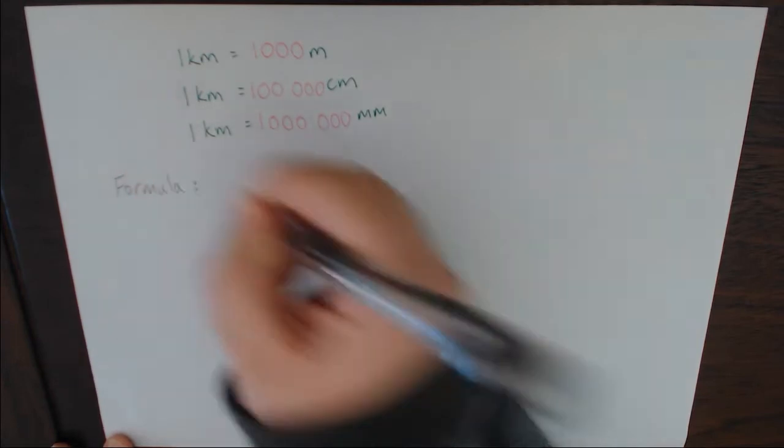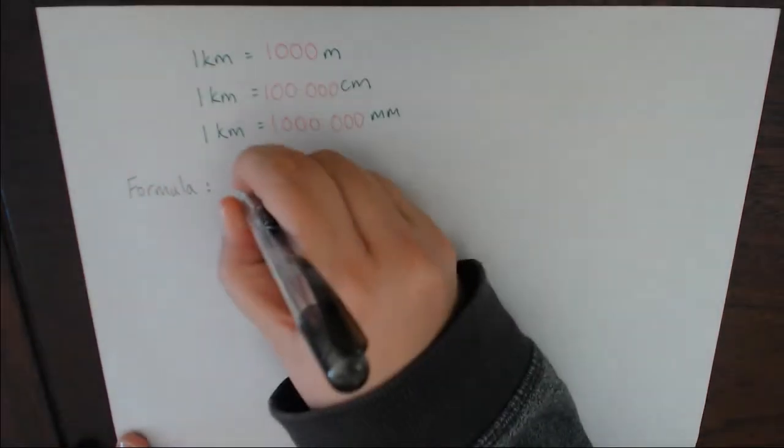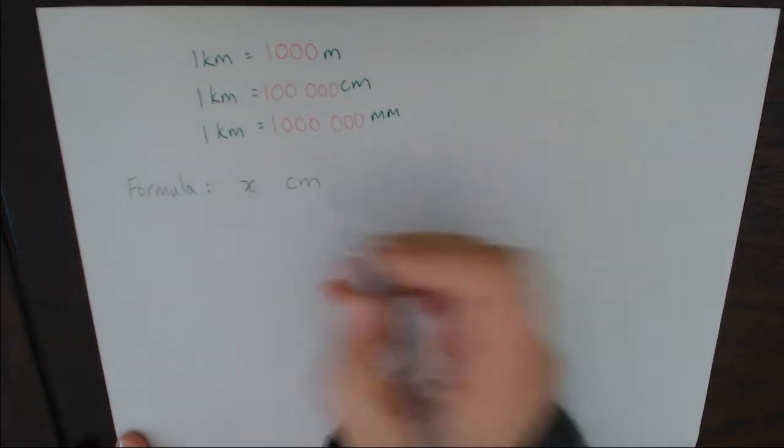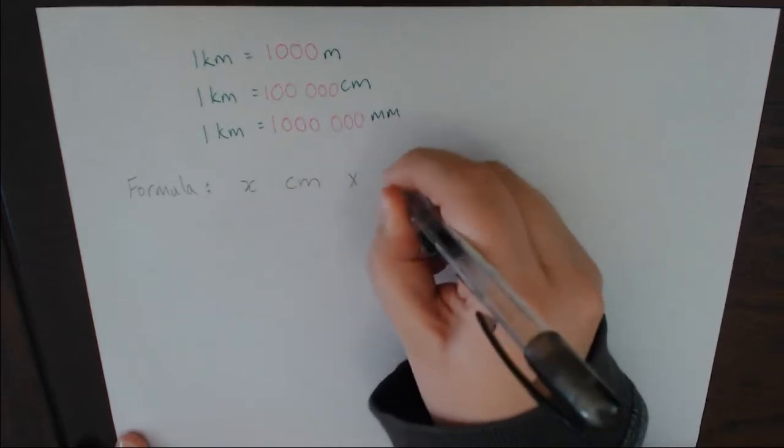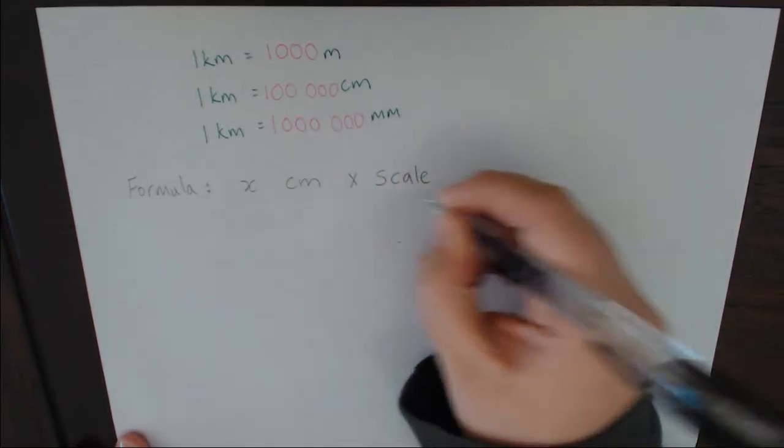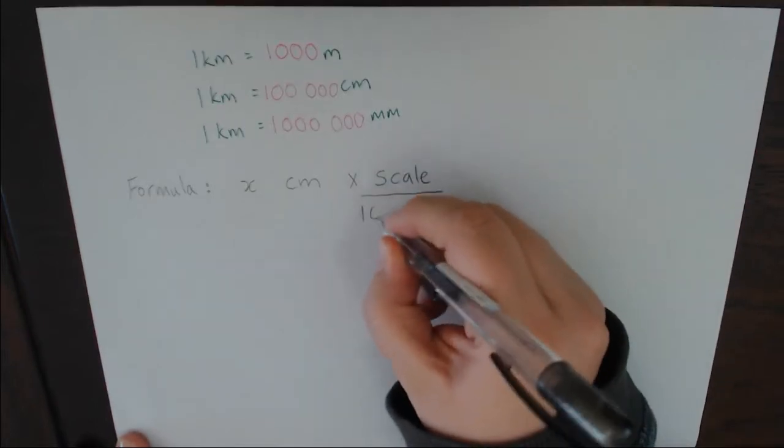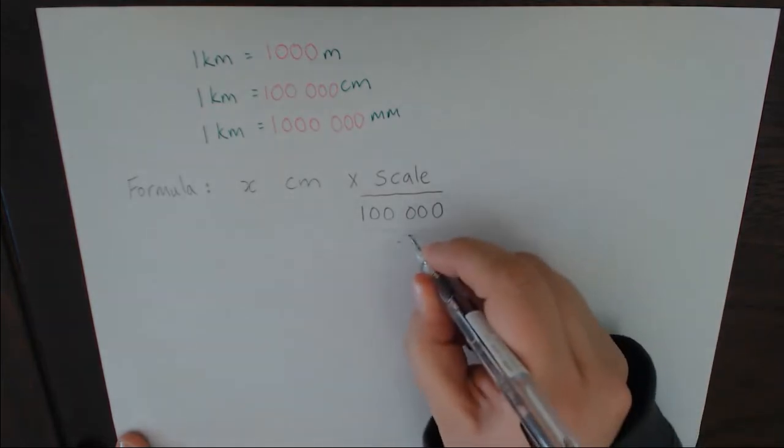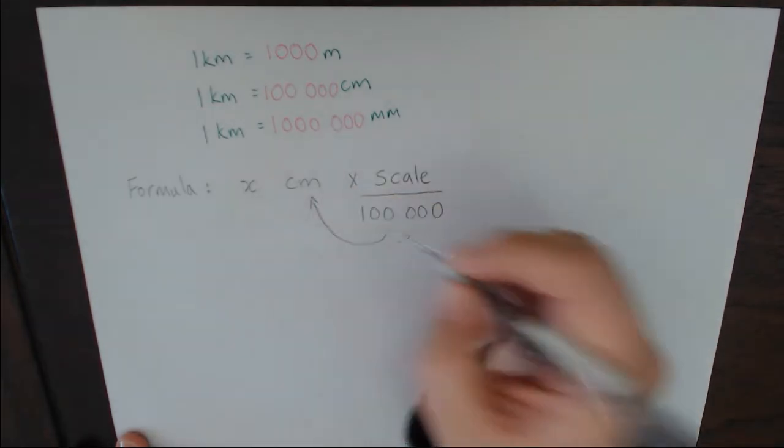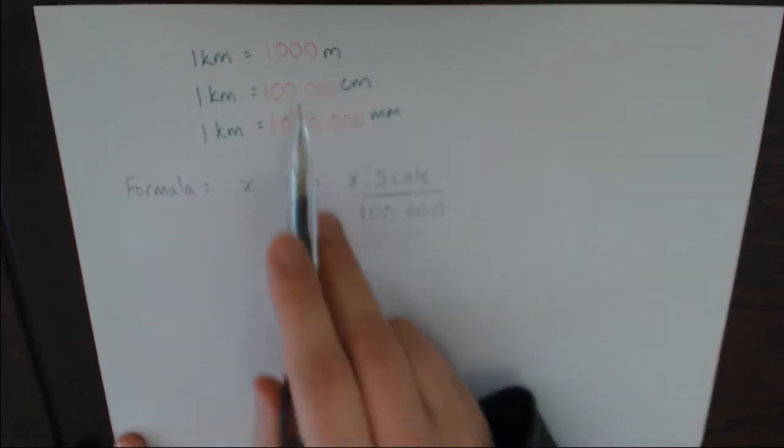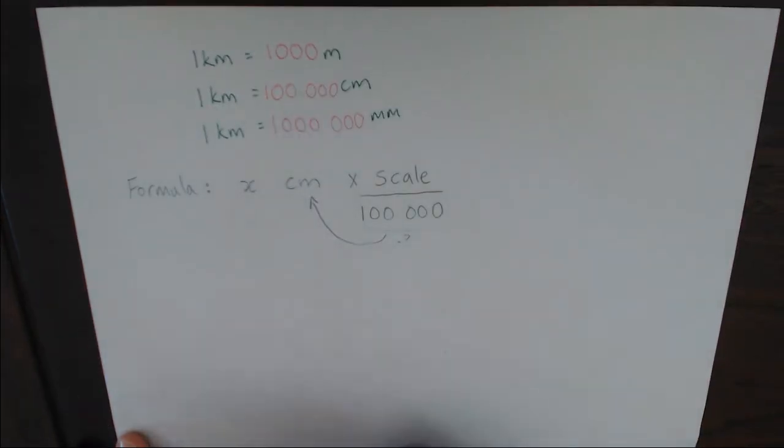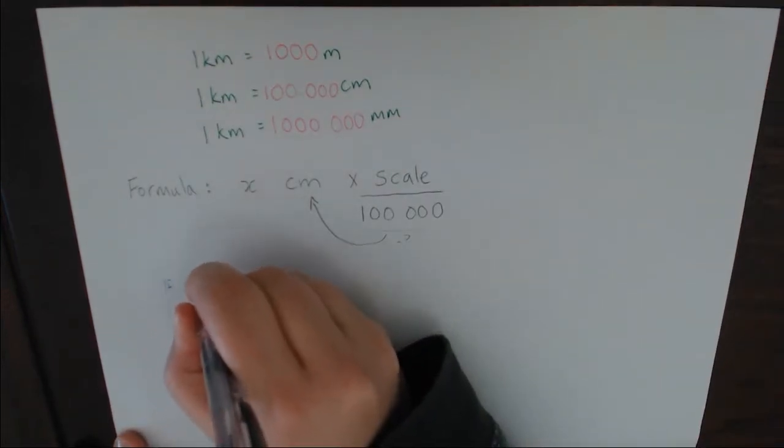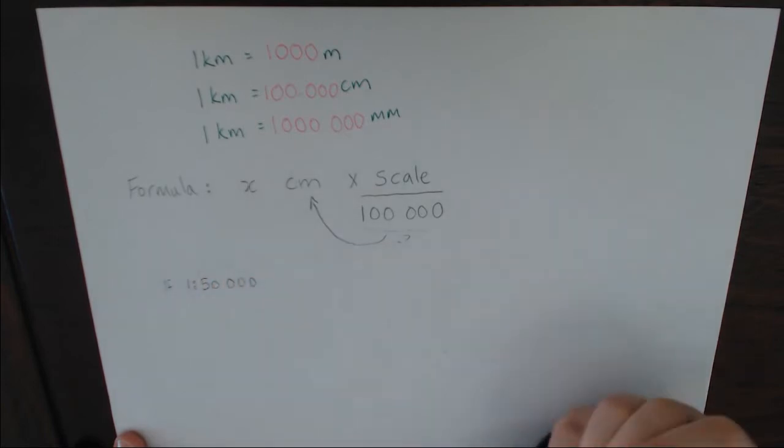Okay, so we are going to look at the formula that we use to measure distance on a map. So we have X as the number of centimeters that we have measured with our ruler. Multiply that by the scale and then we dividing it by 100,000. Why? Why are we dividing it by 100,000? Because we measured in centimeters. So if we've measured in centimeters, we divide by 100,000 because if we're trying to figure out the kilometers, we need to use that particular number.